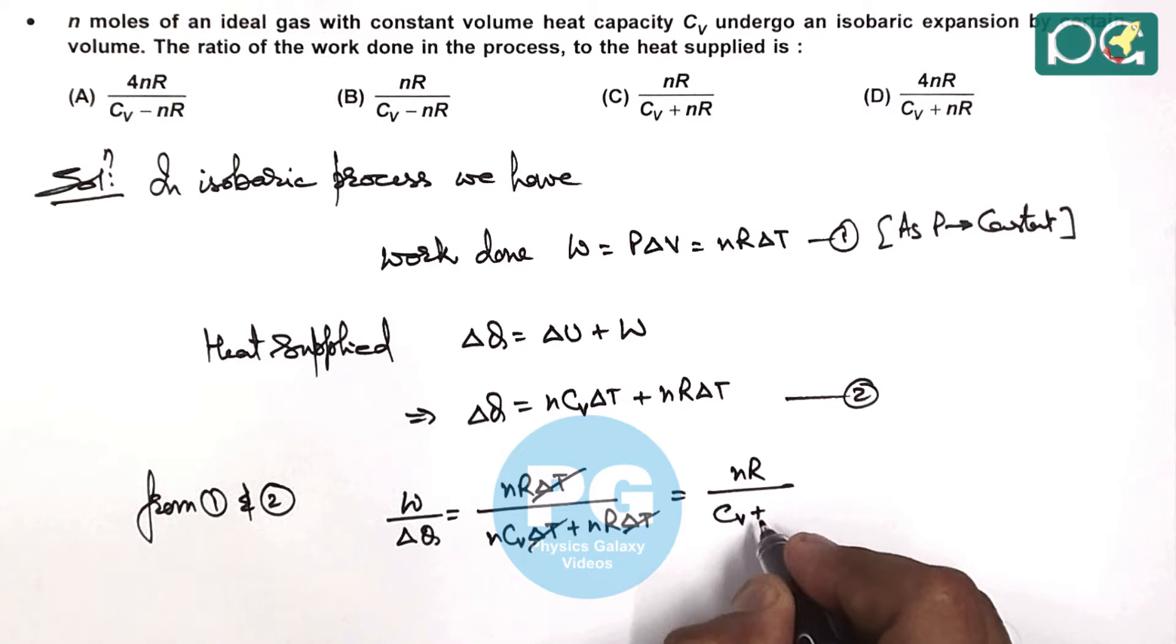So the value we are getting is nR divided by nCv plus nR.